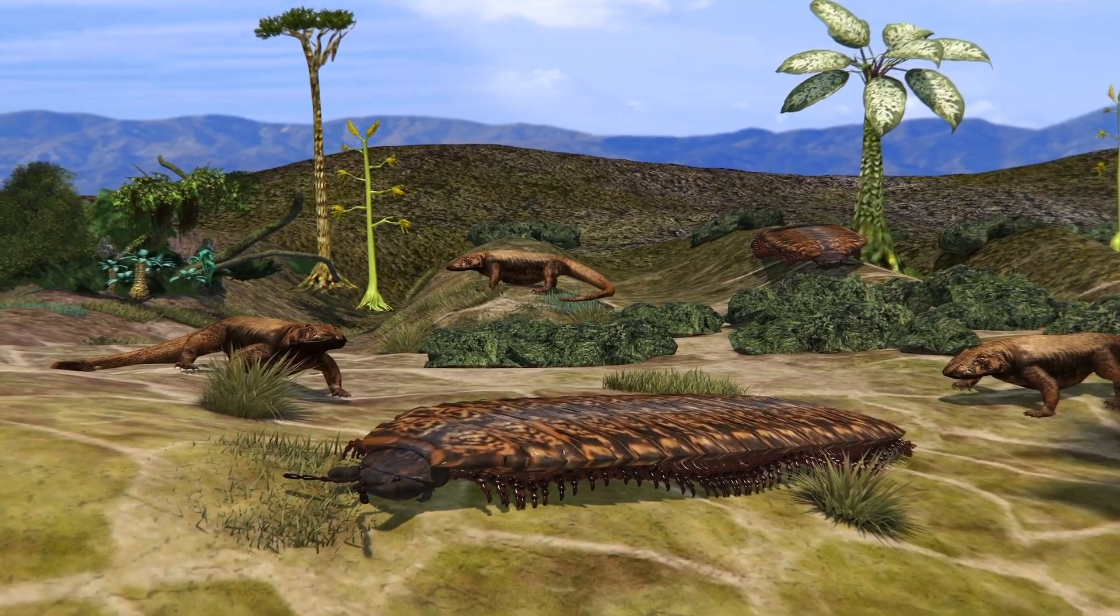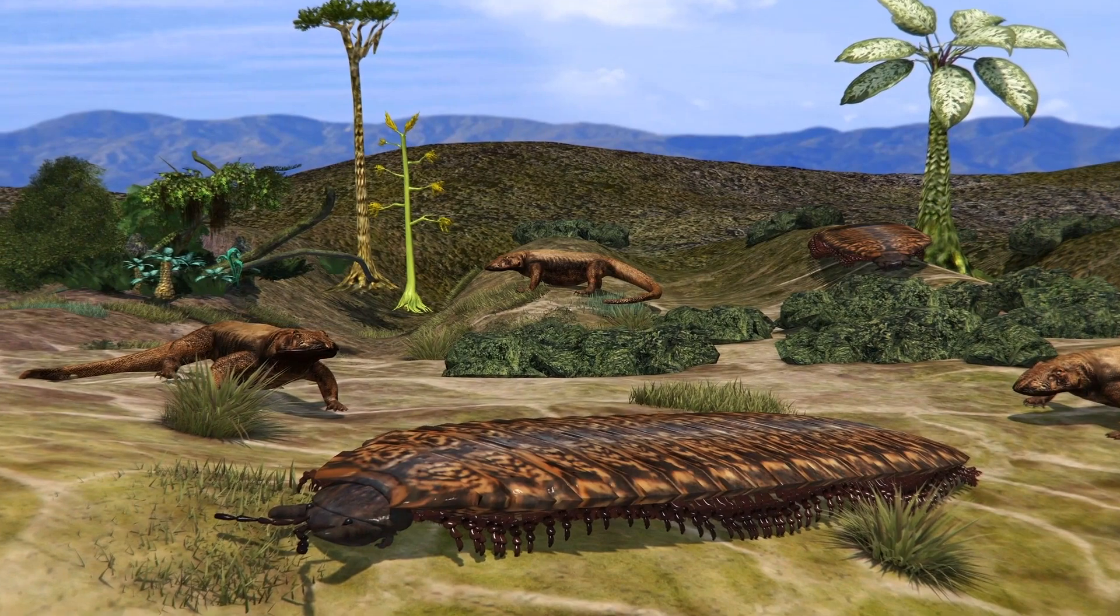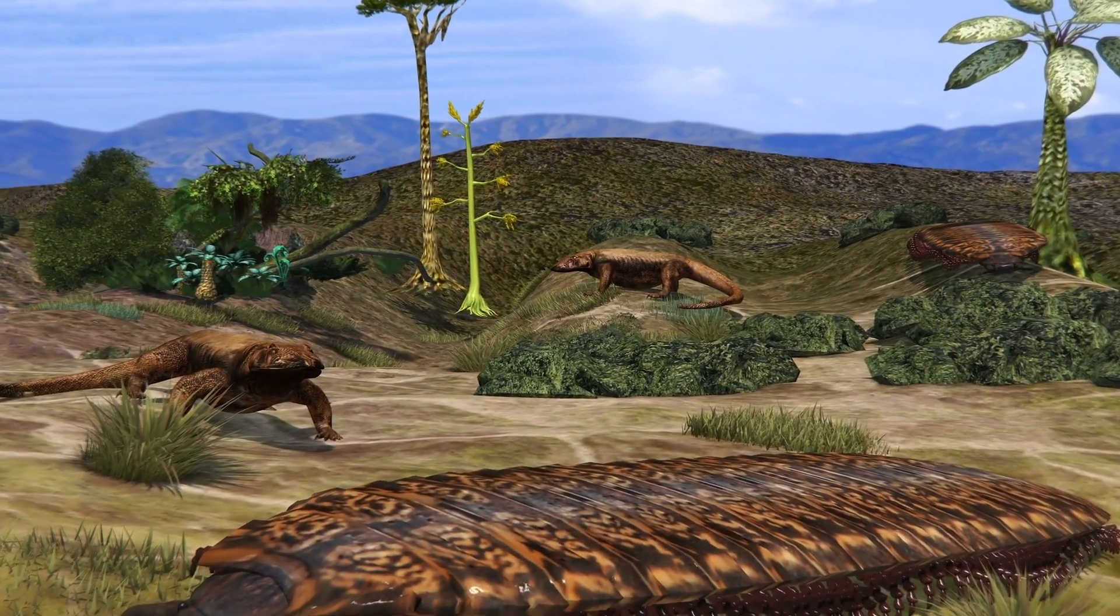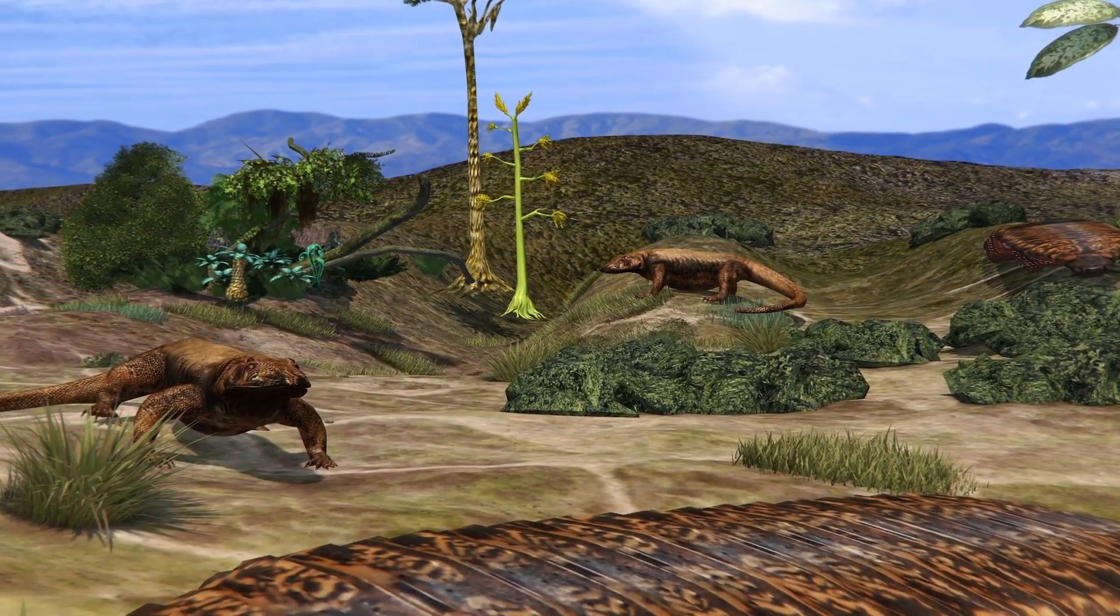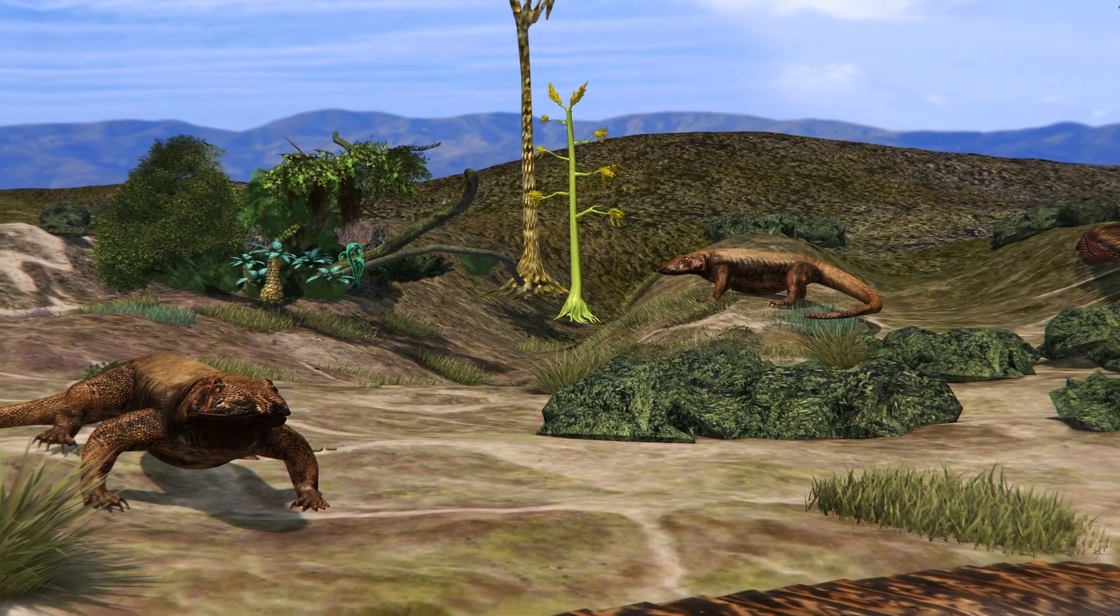However, there were other significant developments in biodiversity during the Devonian. The first insects appeared, and by the late Devonian, forests took shape, and tetrapods evolved to walk on land.